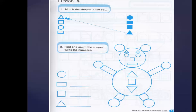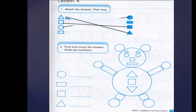The first exercise is: match the shapes. Let's match the shapes together. The first shape is triangle. Very good, let's match it with the triangle here. Let's go to the other shape — it is a square, let's match it with the square. Very good. And then this is a circle, let's match it with the circle. Very good. And then rectangle, let's match it with the rectangle. Excellent!